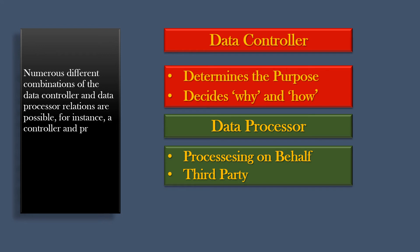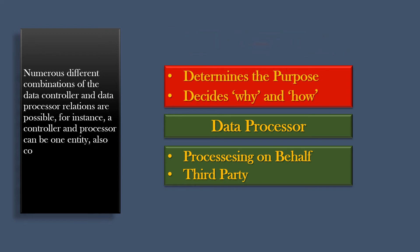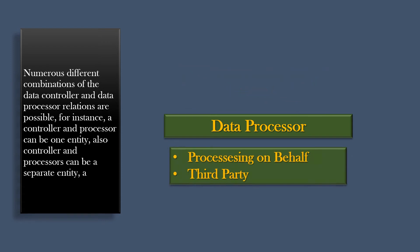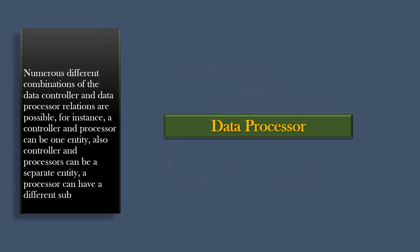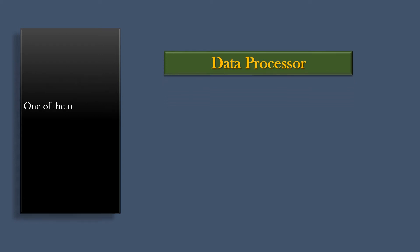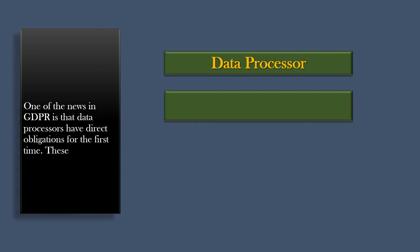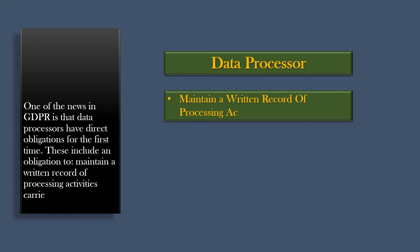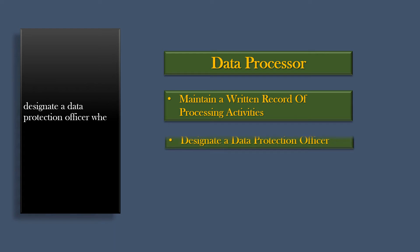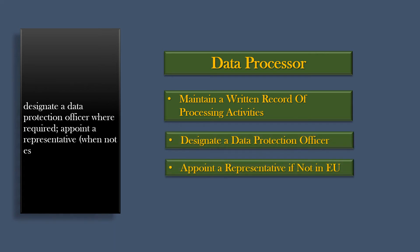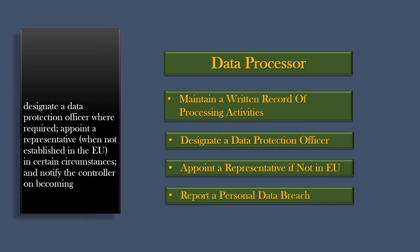For instance, a controller and processor can be one entity; also, controller and processors can be separate entities; a processor can have a different sub-processor. One of the new features in GDPR is that data processors have direct obligations for the first time. These include an obligation to maintain a written record of processing activities carried out on behalf of each controller, designate a data protection officer where required, appoint a representative when not established in the EU in certain circumstances, and notify the controller on becoming aware of a personal data breach without undue delay.